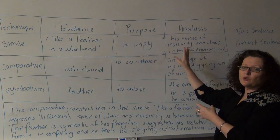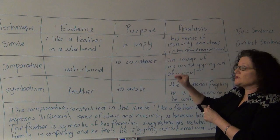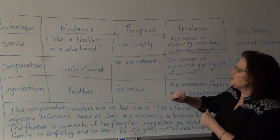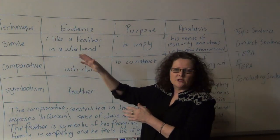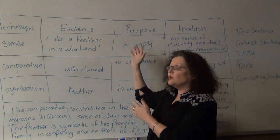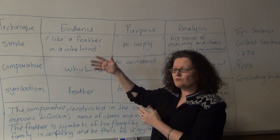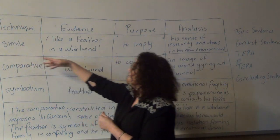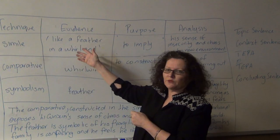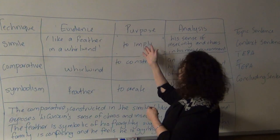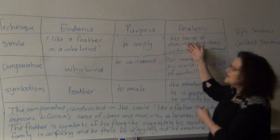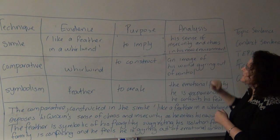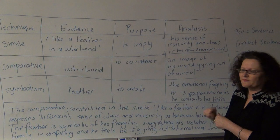This context is talking about when he goes off to the ballet school in Beijing. So it's quite simple when we set it out this way to write a sentence: 'The simile, like a feather in a whirlwind, implies Li Cunxin's sense of insecurity and chaos in his new environment.'